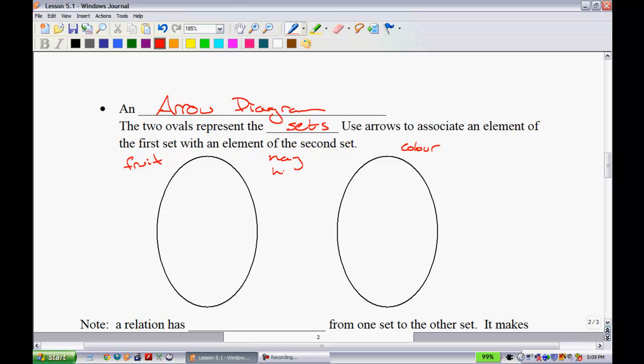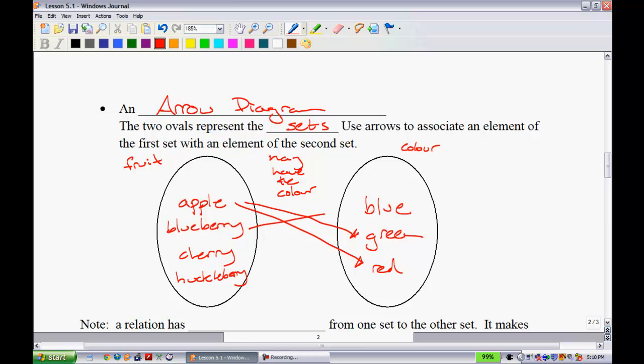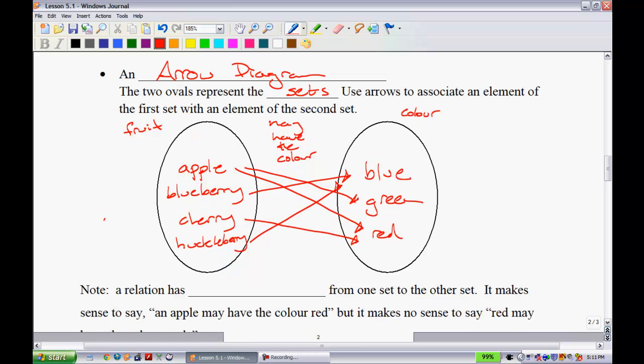We use arrows to associate an element of the first set with an element of the second set. So, the arrows are going to be going from left to right. And in the middle here, we're going to have, may have the color. That's kind of like the relation mapping one set onto the other. The different fruits we had was an apple, a blueberry, a cherry, and a huckleberry. And we only had three different colors. You'll notice that this is maybe a little bit easier way to write these. You don't have to write quite as many things because there's going to be a couple fruits that map onto the same thing.